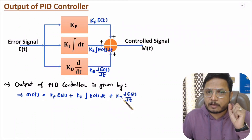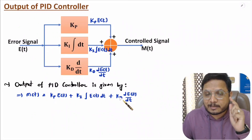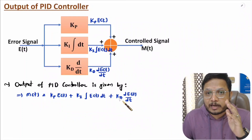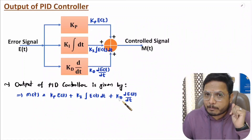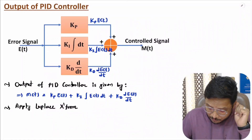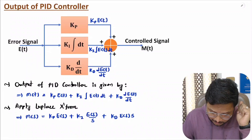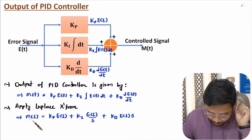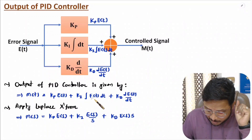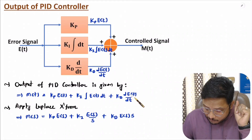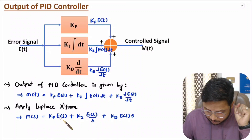We have the output in the time domain, but usually we analyze systems in the frequency domain. So to express this output in terms of frequency domain, let us apply the Laplace transform. After applying Laplace transform, M(t) becomes M(s), E(t) becomes E(s), integration becomes E(s)/s, and differentiation becomes E(s) multiplied by s. We can factor out E(s) as common.